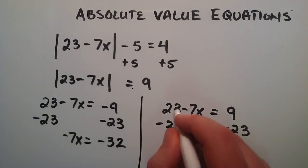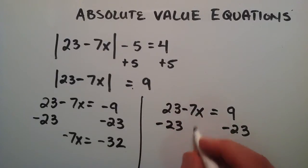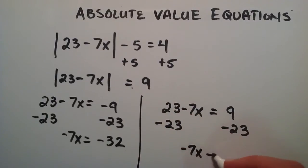And then over here, positive 23, negative 23 gives us 0. We're left with 7x on the left hand side once again. 9 minus 23 is a negative 14.